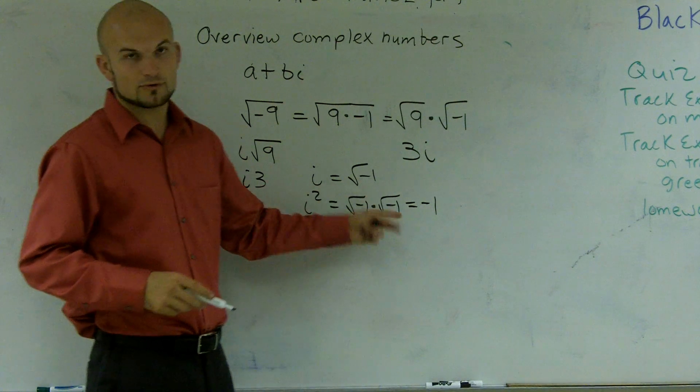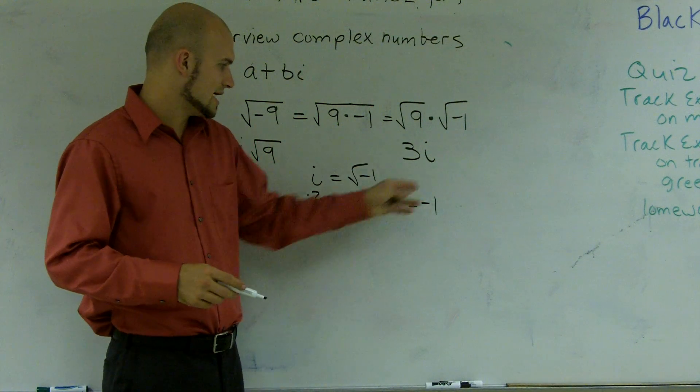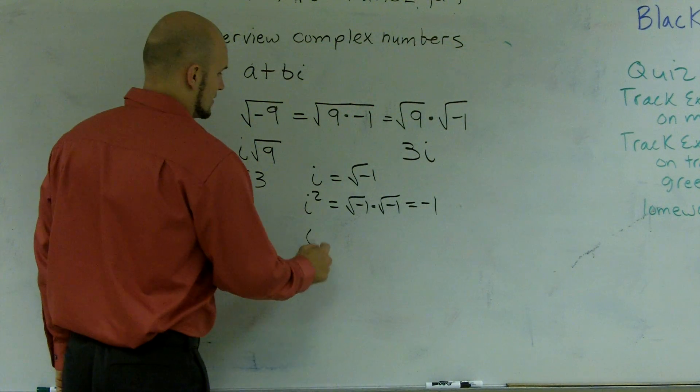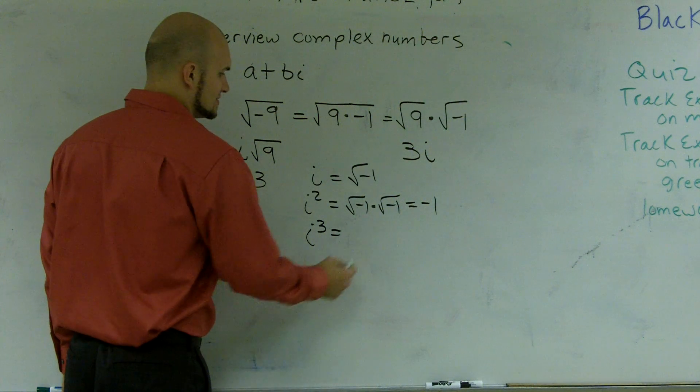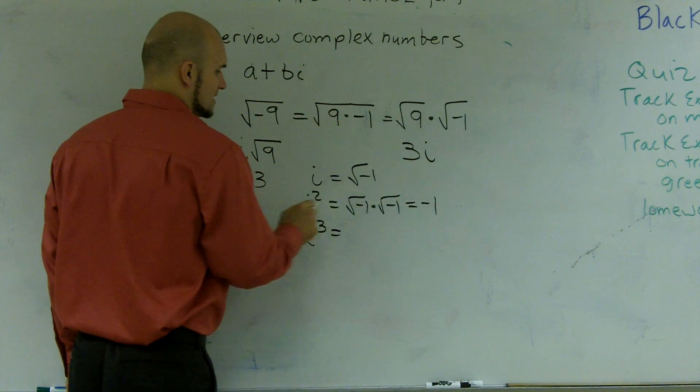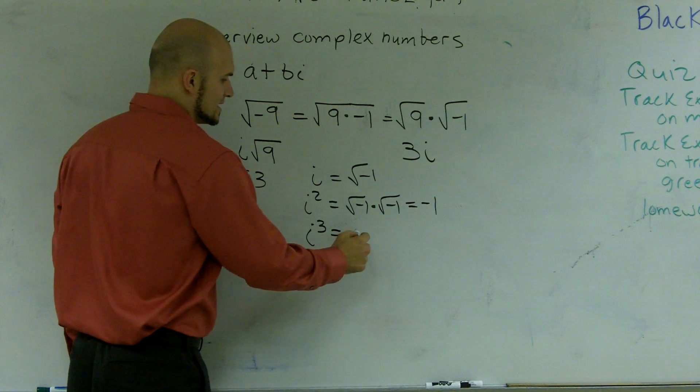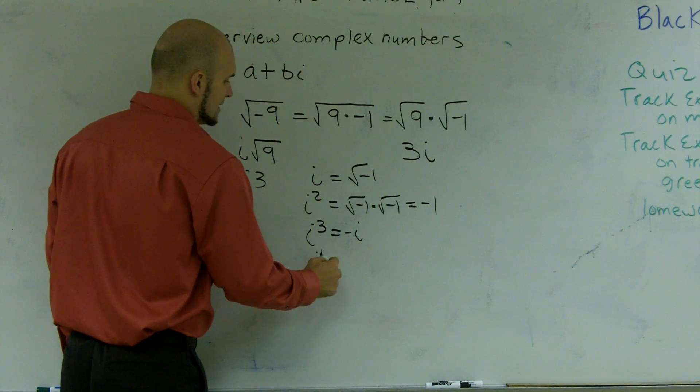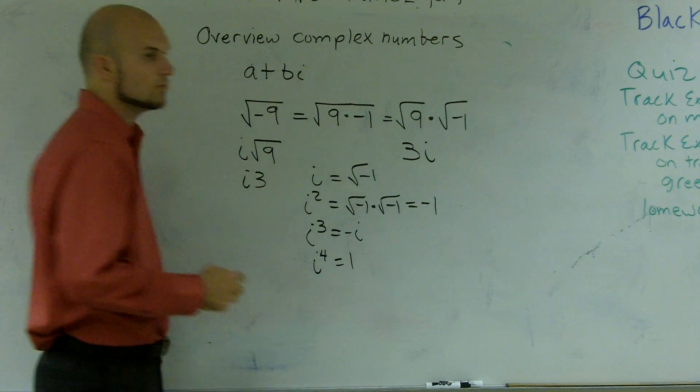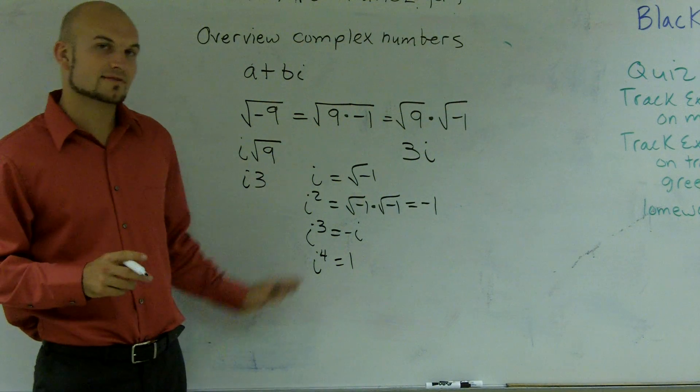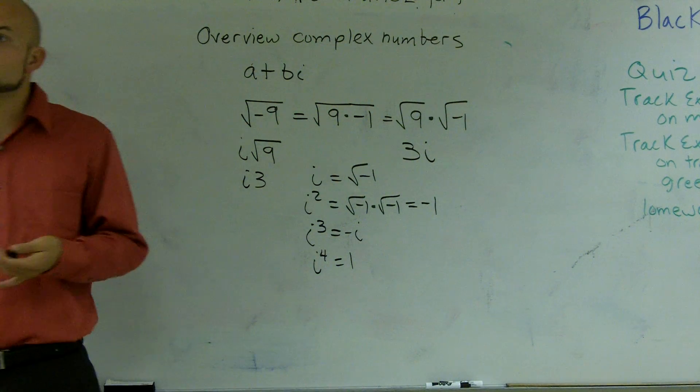Because square root times square root would be square root of square, which will cancel out, equals negative 1. i cubed is going to equal negative i. Because multiplying i on both sides, i times negative 1 is equal to a negative i. And i to the fourth is equal to 1. So, that's just kind of some important things for you guys to remember when doing this.